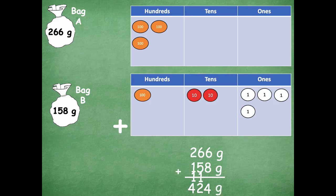So then also don't forget to label your unit measure with grams. So 266 grams plus 158 grams gives you a total of 424 grams.